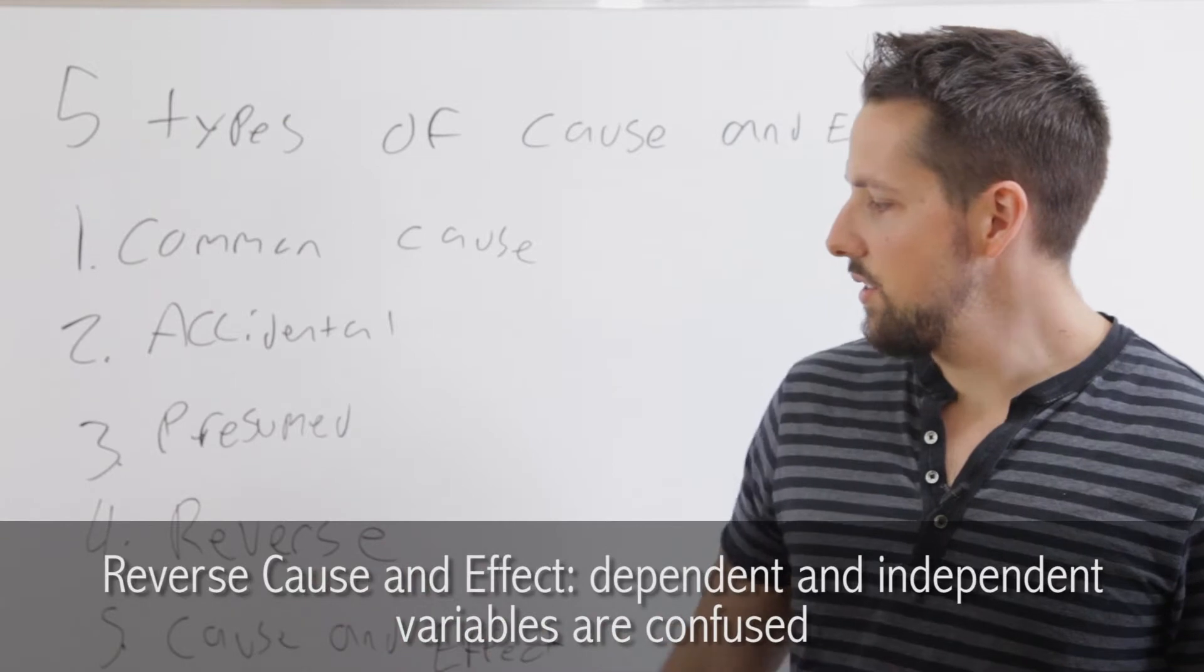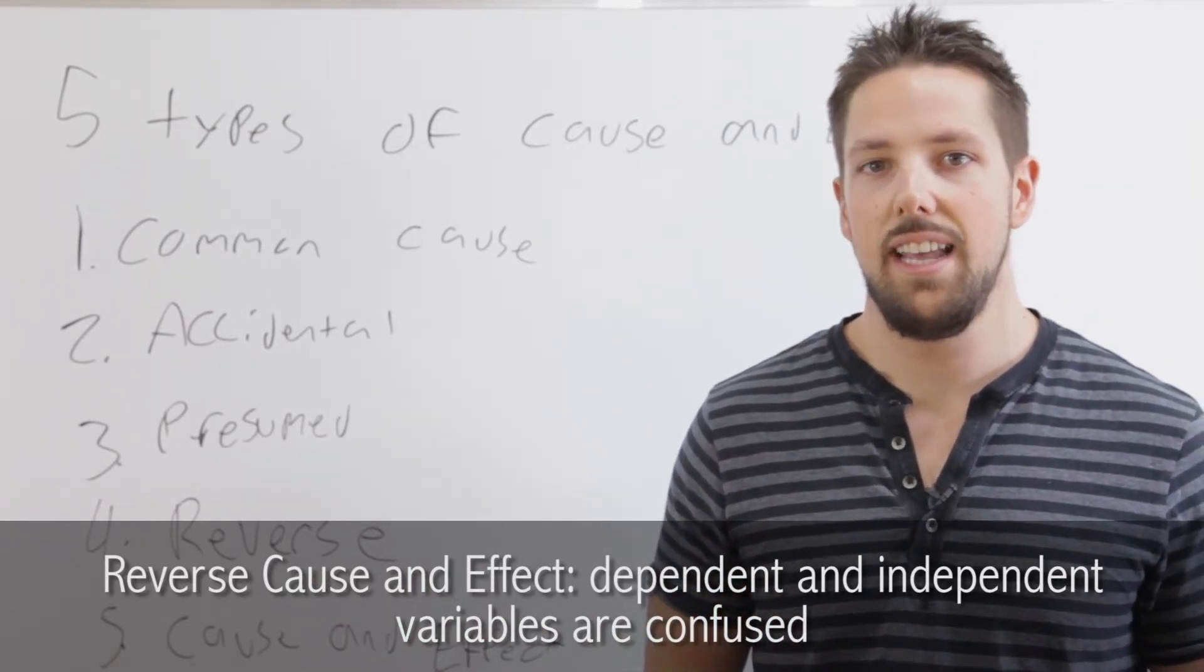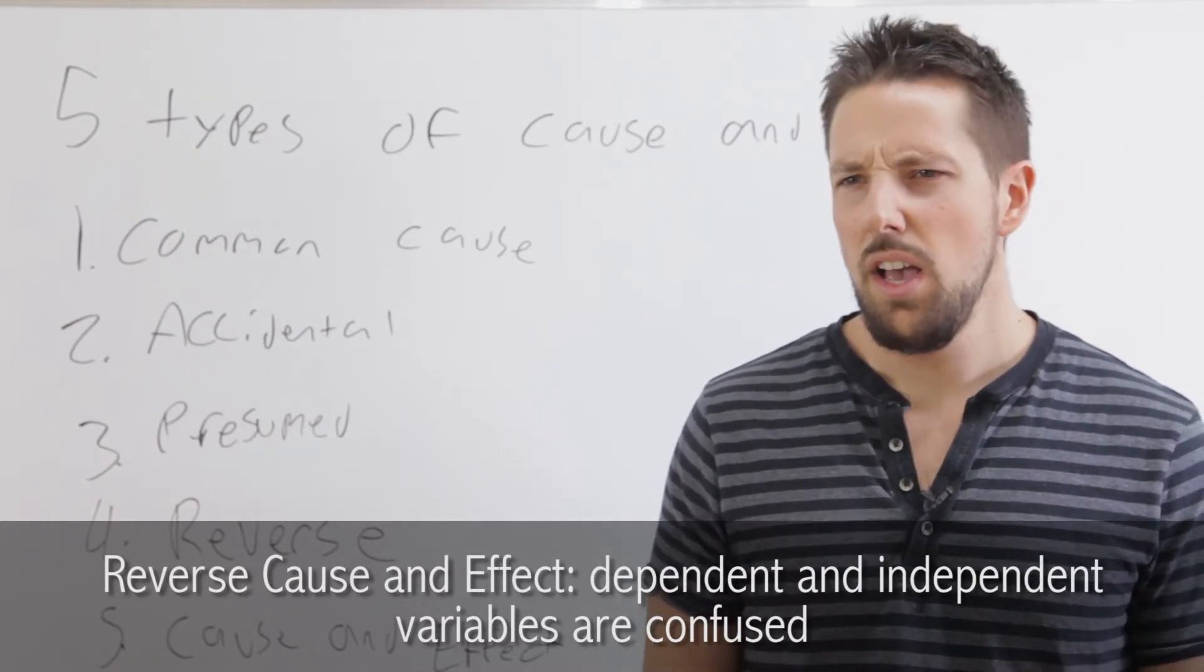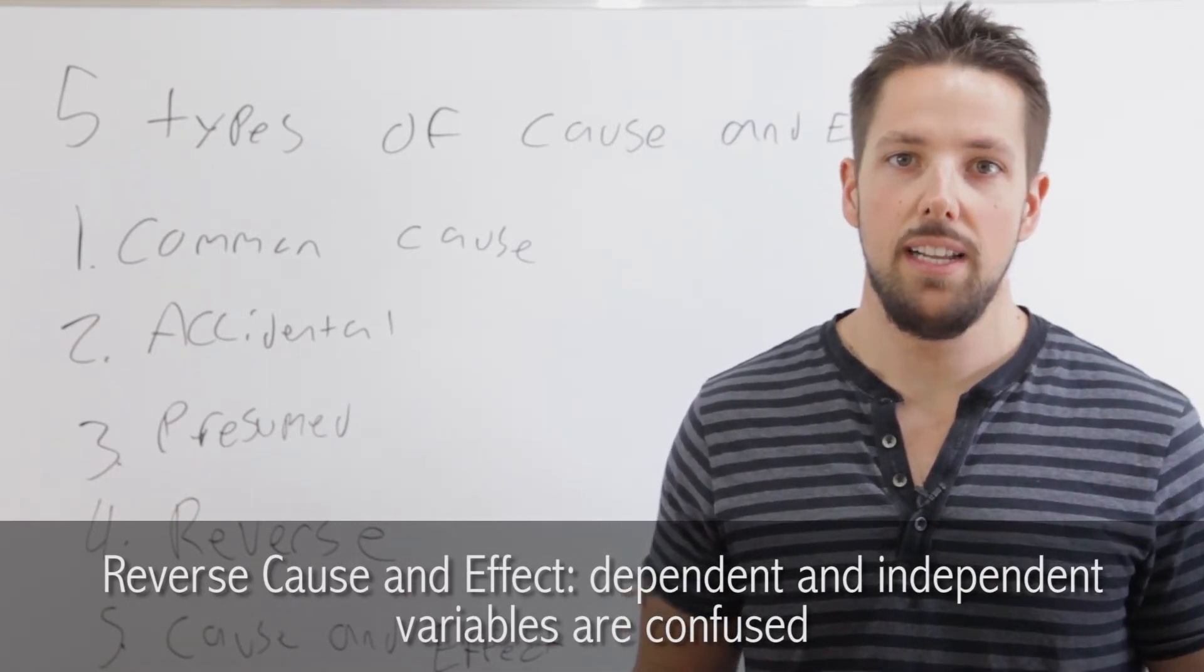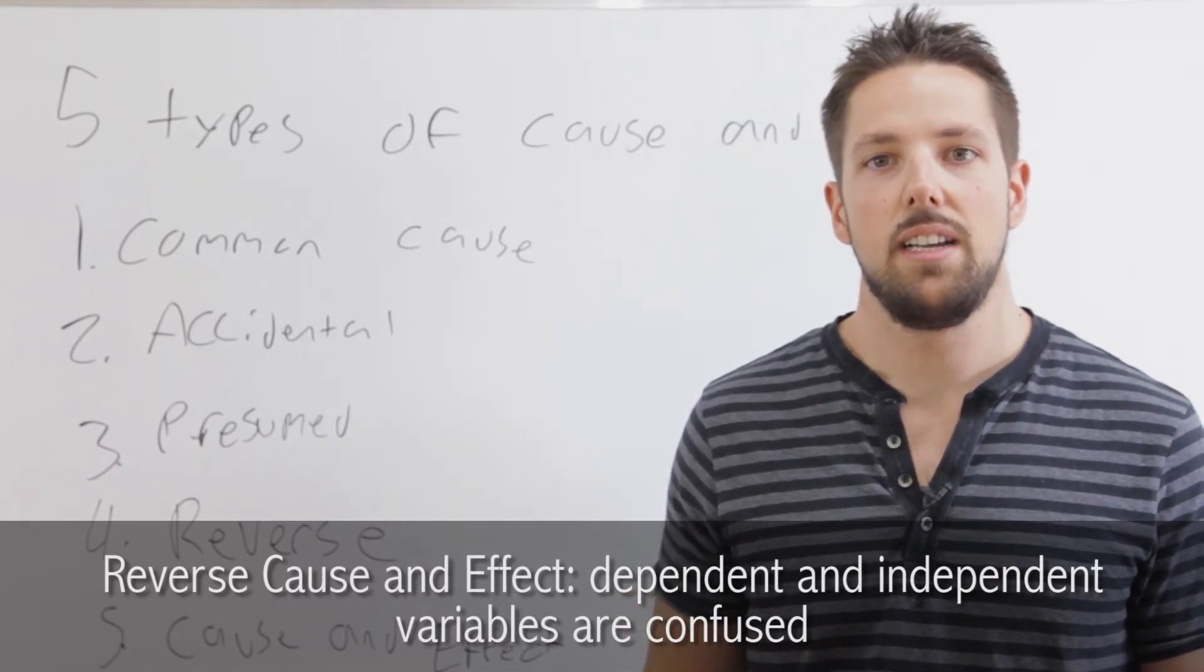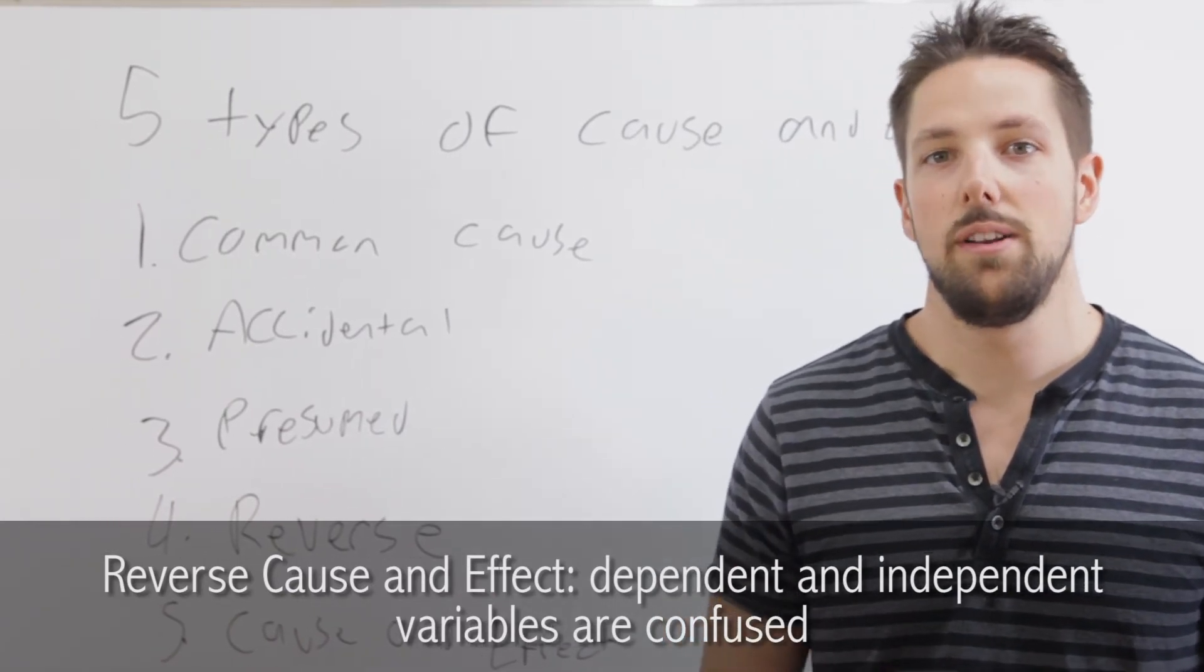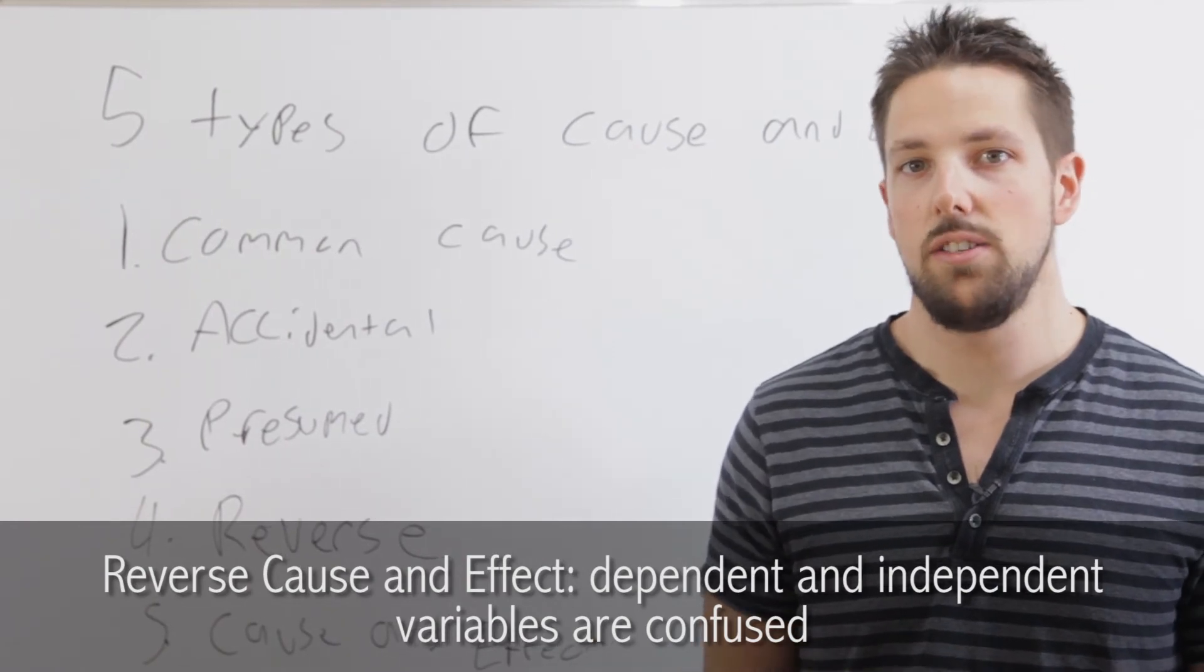The next type we have is a reverse cause and effect relationship. That's when you mix up the dependent and the independent variable in assigning causality. It would be like you noticed a strong correlation every time you open your umbrella compared to how much it rains. So you assume that opening your umbrella causes it to rain, when in reality, you've just mixed up the two variables. Rain causes you to open your umbrella.